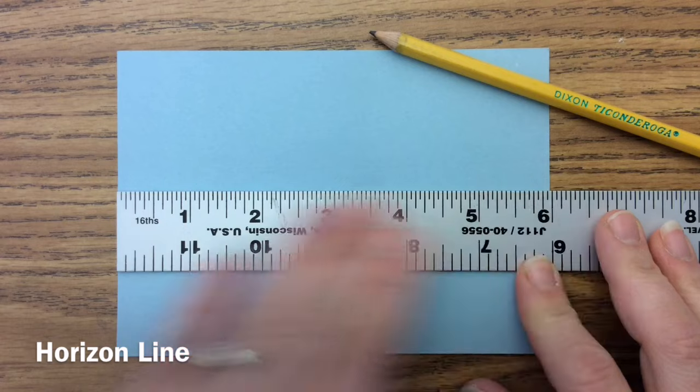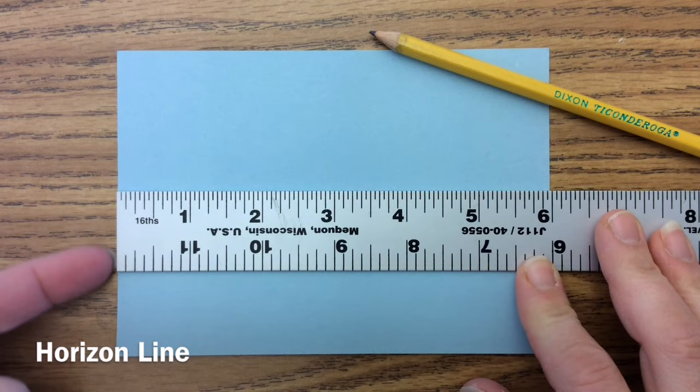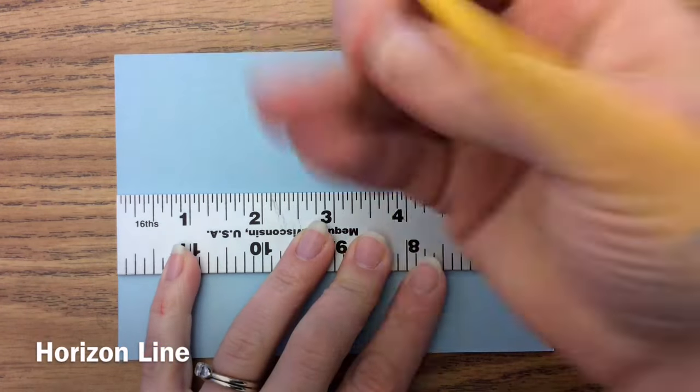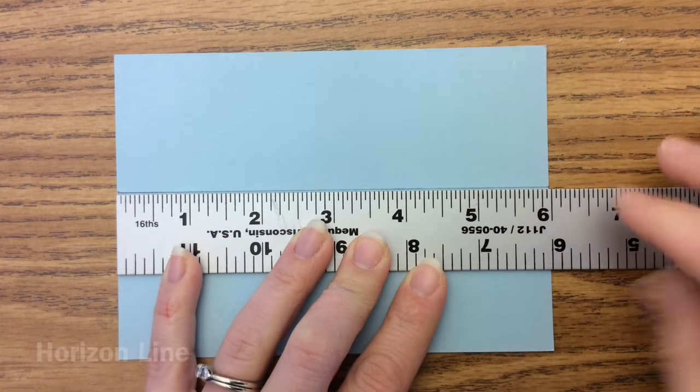I'm going to make my horizon line absolutely straight, so I'll line up my ruler with the edge of my paper. Take my pencil, make a line from one edge to the other.